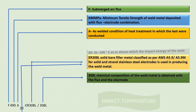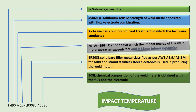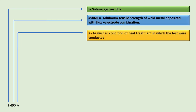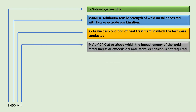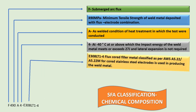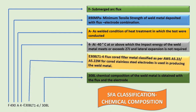If there is a requirement of impact at minus 196 degrees Celsius, there is an additional requirement of 0.38 mm lateral expansion along with the requirement of 27 joules minimum absorbed energy. Let us see an example where there is a change in the form of filler wire. F represents submerged arc welding; 490 indicates the minimum tensile strength requirement; A indicates as-welded condition; minus 40 indicates the test temperature for impact. E308LT1-4 indicates the flux-cored filler metal classification as per AWS SFA 5.22 for cored stainless steel electrodes used in producing the weld metal. 308L indicates the chemical composition formed as the result of using this flux-cored filler metal wire.